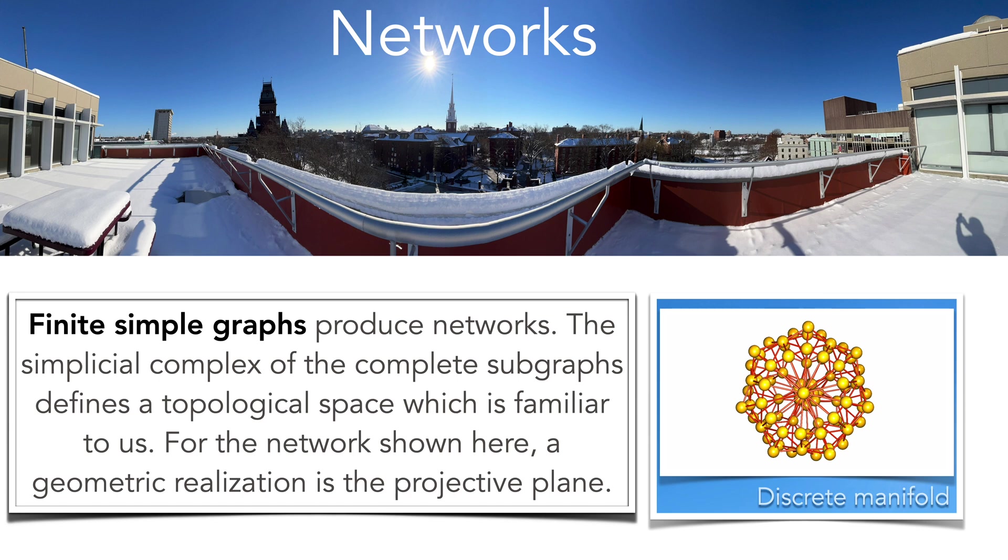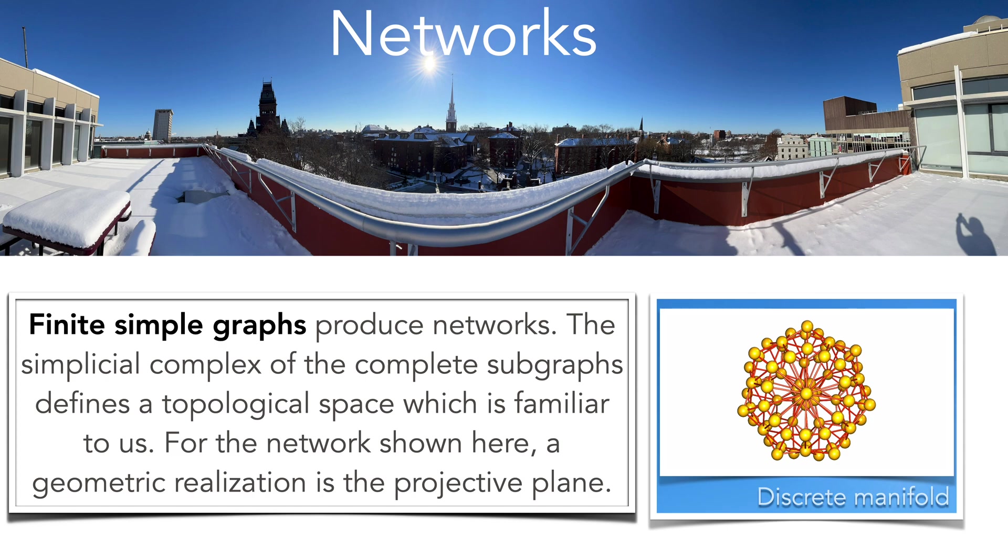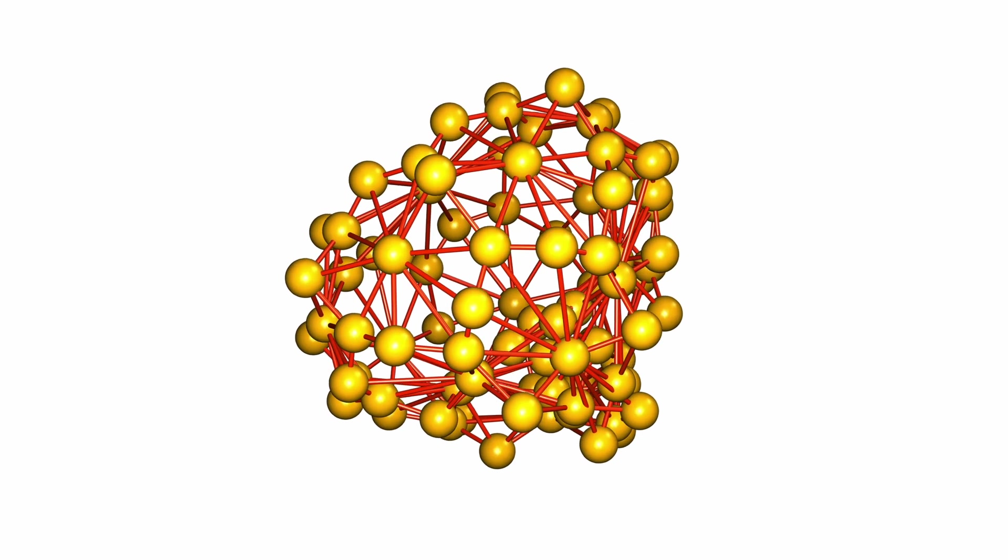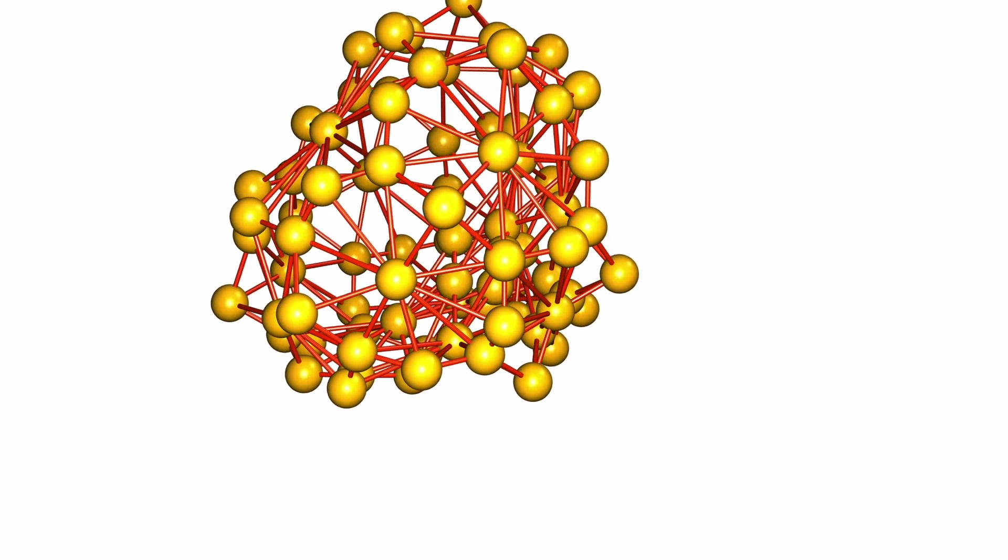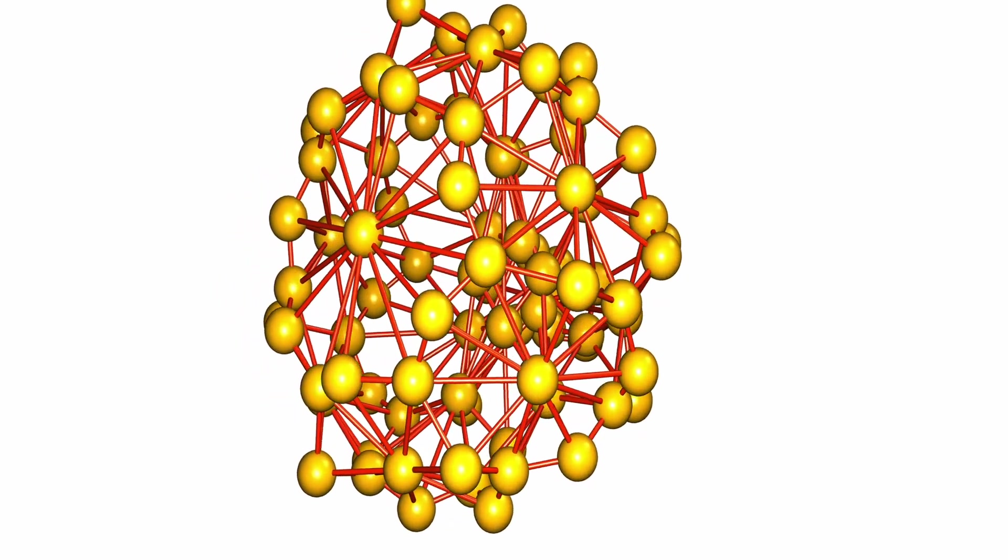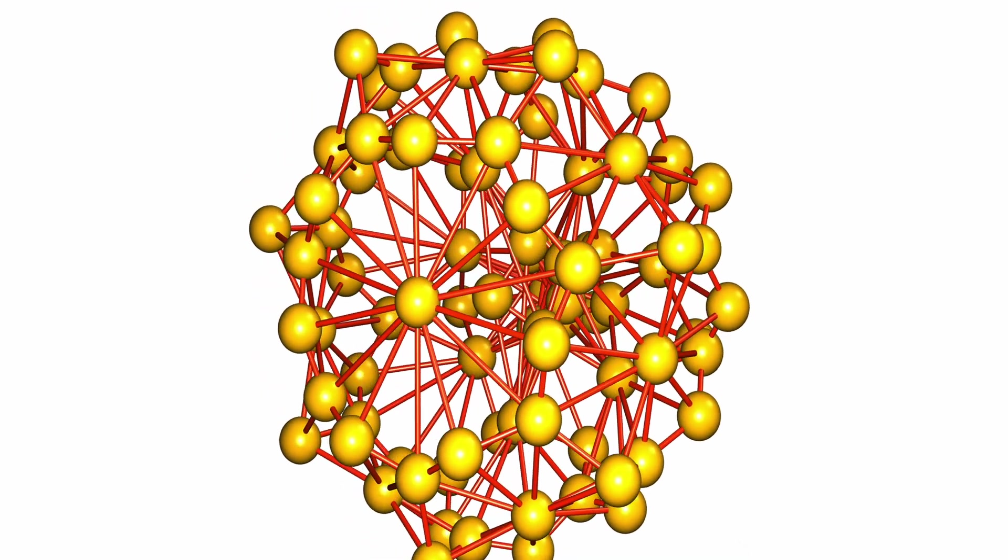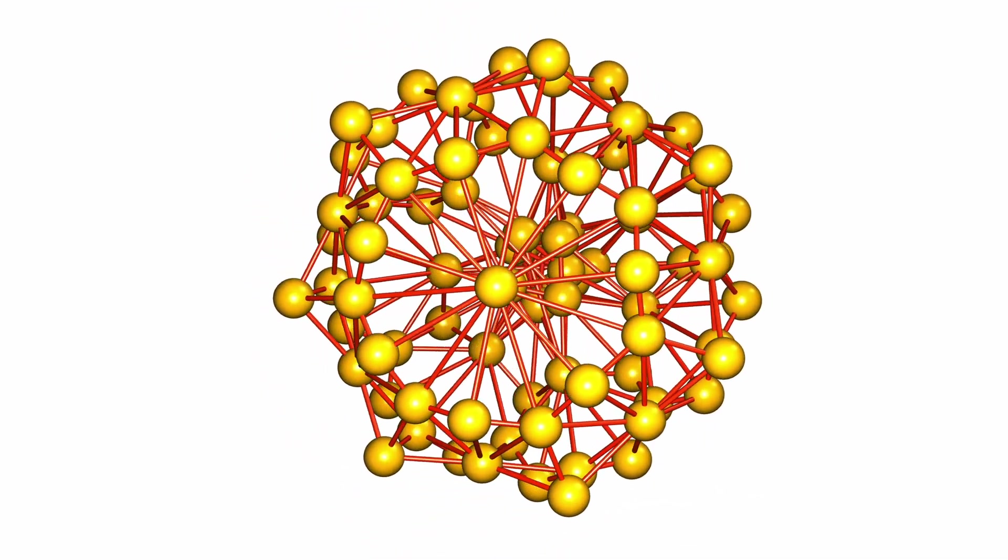We can approximate topological spaces with networks which are finite simple graphs. Discrete manifolds are special cases. In order to go from the discrete to the continuum look at the structure of all complete subgraphs, here in this case only triangles edges or vertices, and use this to build a geometric realization. So here we see a particular projective plane. It's a two sphere in which opposite points are identified and this network has 85 vertices, 252 edges and 168 triangles.